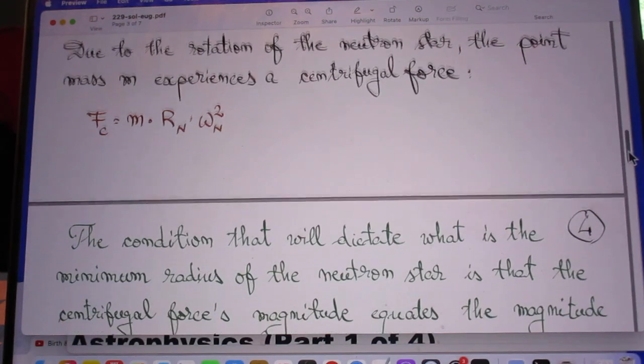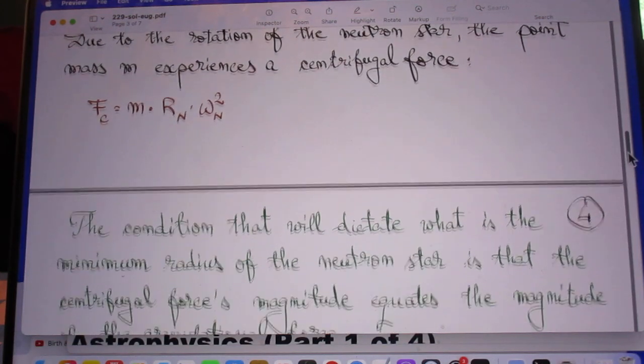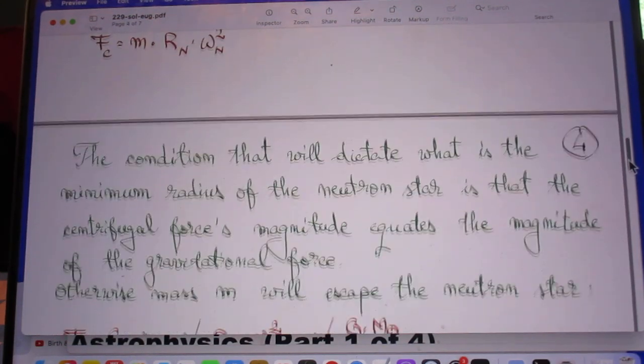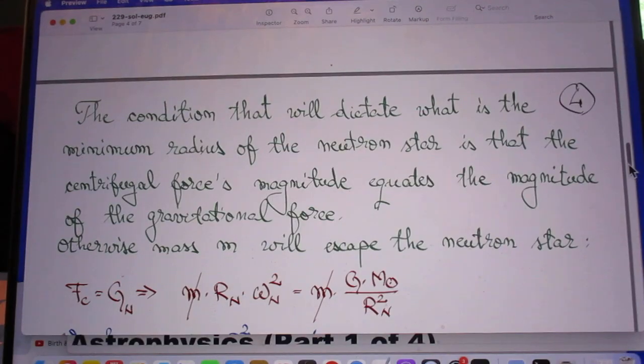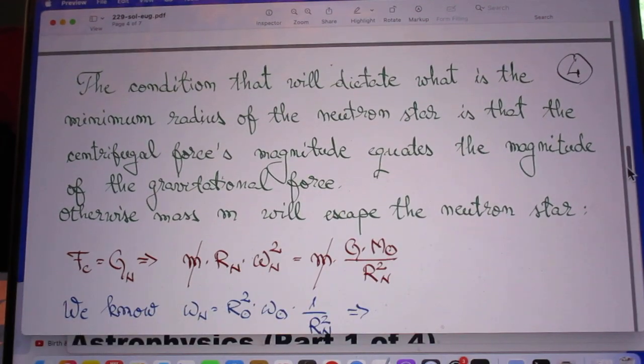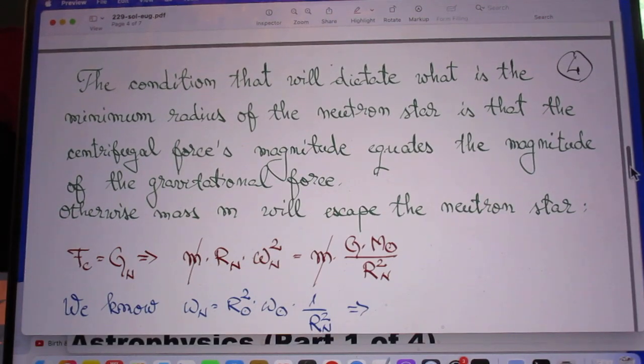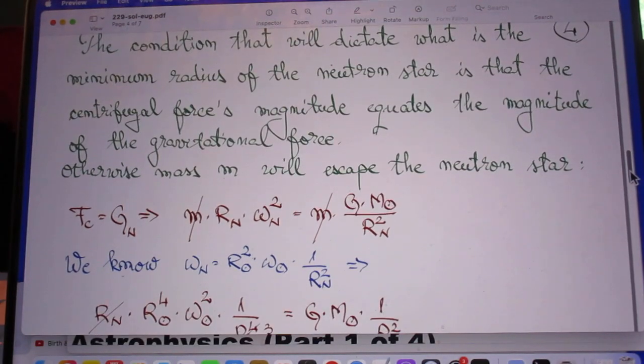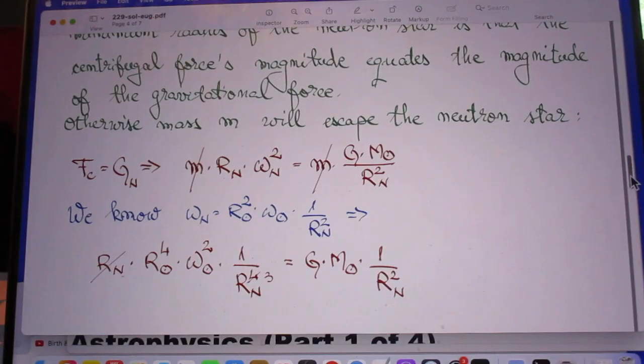It has the same magnitude as the centripetal force. So here you see the centrifugal force. And now, of course, that centrifugal force cannot become larger than the gravitational force at the equator, because then mass would be thrown out in space.